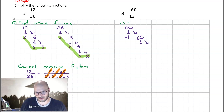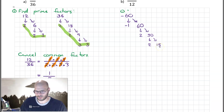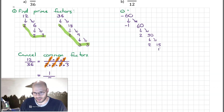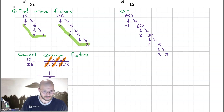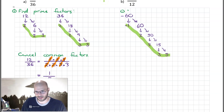Can we divide 60 by 2? Yes, we get 30. 30 is even so we divide by 2 again, giving 15. If we try to divide 15 by 2 we get 7.5, and we don't like decimals, so we move to the next prime, which is 3. Can we divide 15 by 3? Yes — we get 3 and 5. Because 5 is a prime number, we've discovered all of our factors.